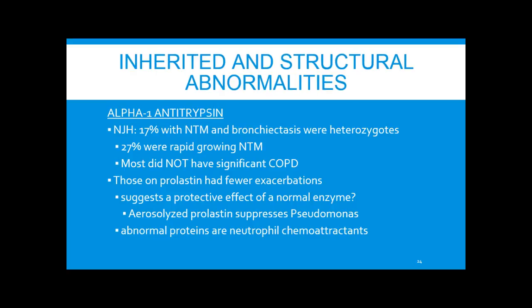Alpha-1 antitrypsin is similar. In the same registry, 17% of patients with NTM and bronchiectasis were heterozygotes for alpha-1 antitrypsin, and 27% of those had rapidly growing NTM. Most did not have COPD or other classic findings of alpha-1 antitrypsin disease. Those in this category who were on prolastin had fewer exacerbations, suggesting a possible protective effect of having a normal enzyme.